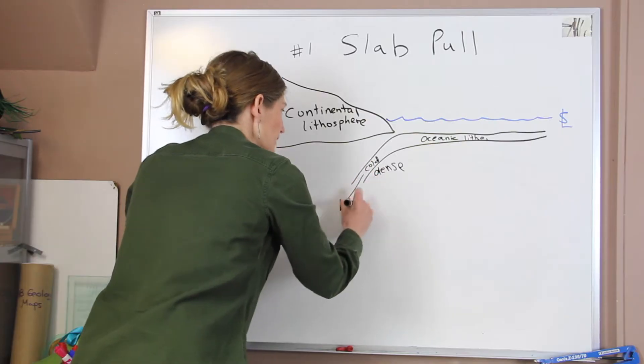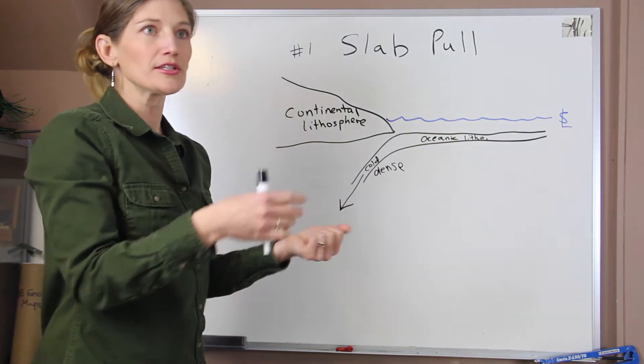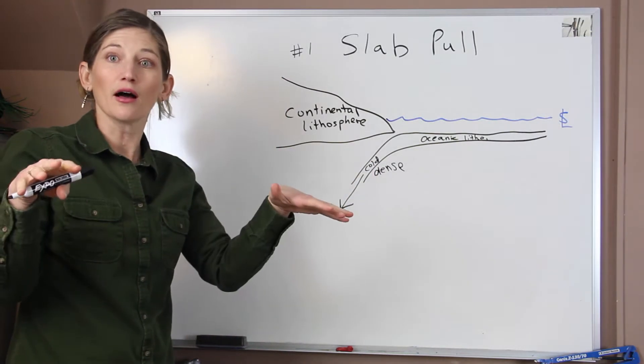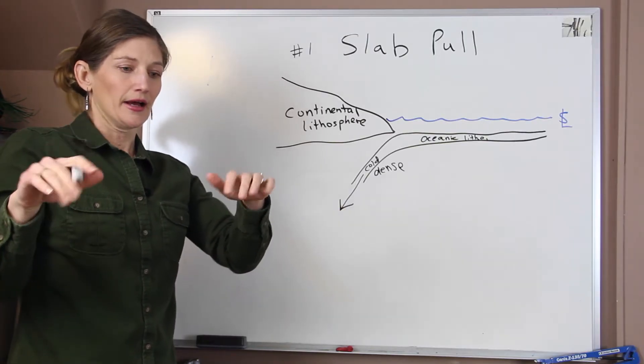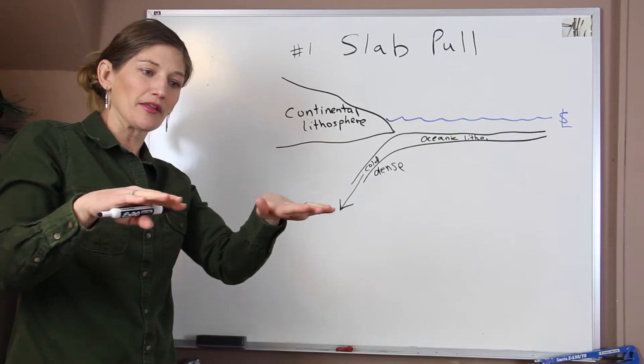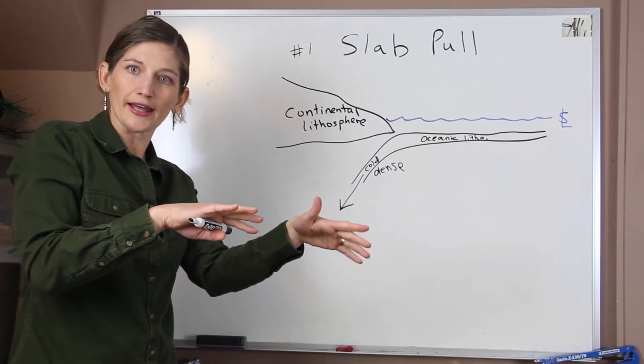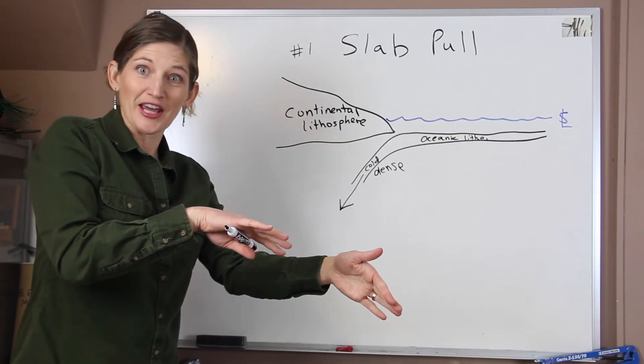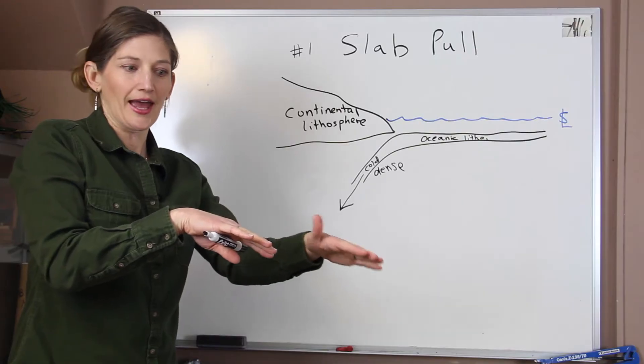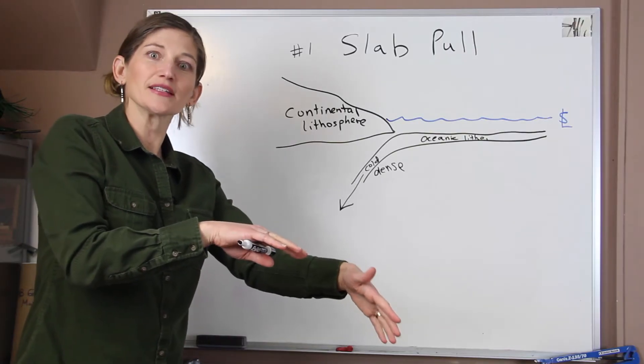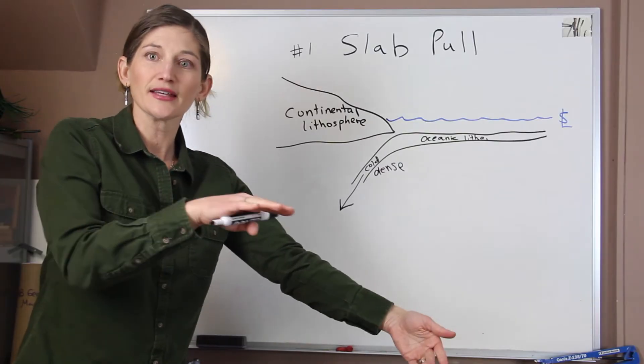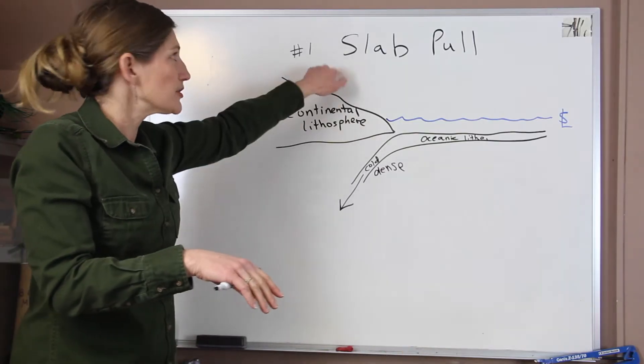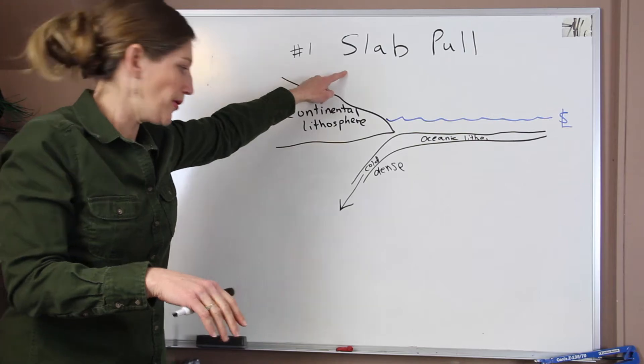And that pulls the plate down. So this, you can imagine if you had a tablecloth on a table and you had maybe the tablecloth, if you just slide it towards the edge so that more of it starts to hang off the table. As it starts to go, as more of the tablecloth kind of goes off the edge of the table, it pulls the rest of the tablecloth behind it. So that's this idea of slab pull.